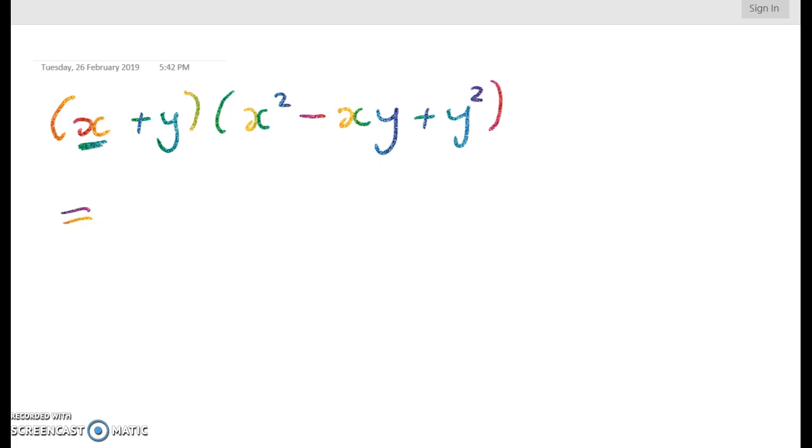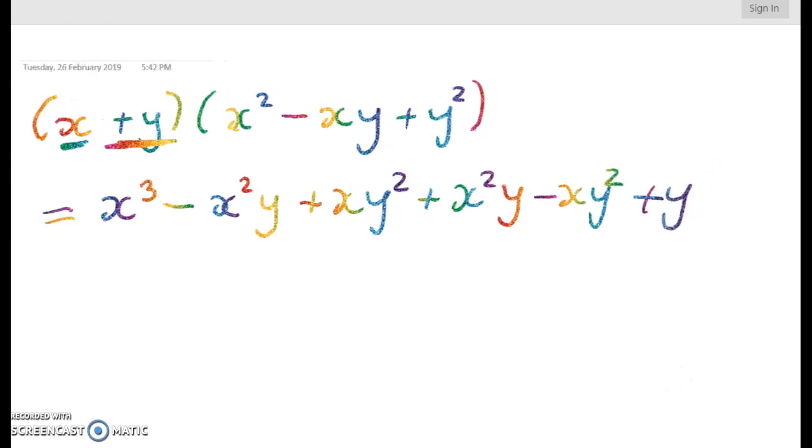So first I'm going to do x times everything and I'm going to write it in xy order each time just to keep it clean. So x cubed minus x squared y plus xy squared. Now I'm going to go through and do the same thing with y times everything. So it's going to be plus x squared y minus xy squared plus y cubed.